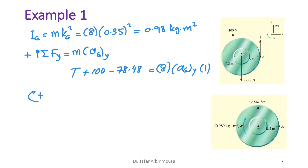For equation two, taking clockwise as positive, the sum of moments about G equals I_G·α. The two moment-producing forces are the tension and the 100 N force.